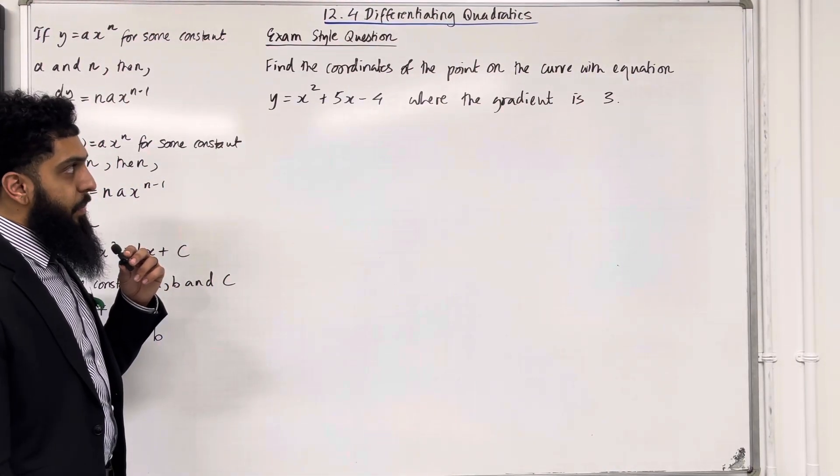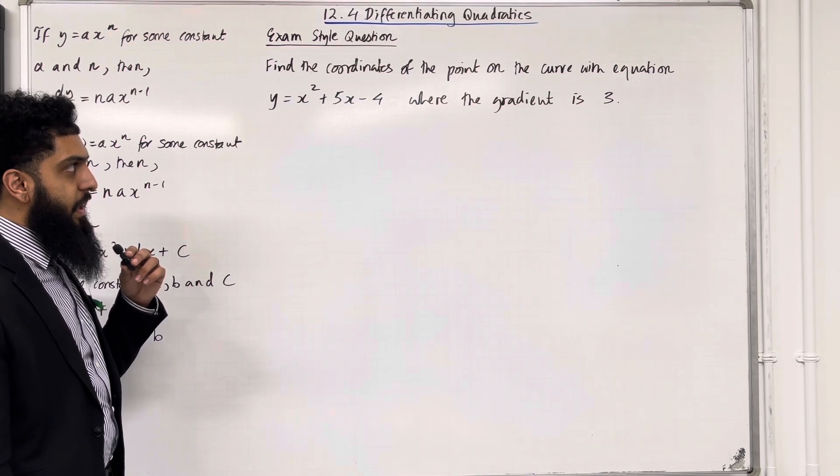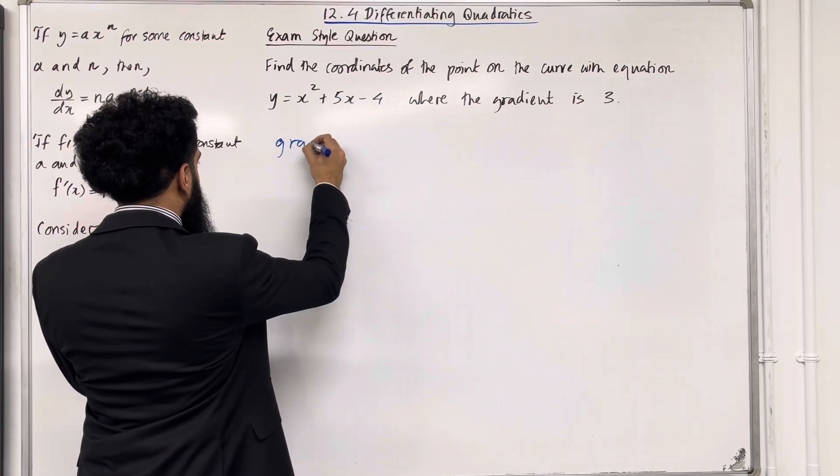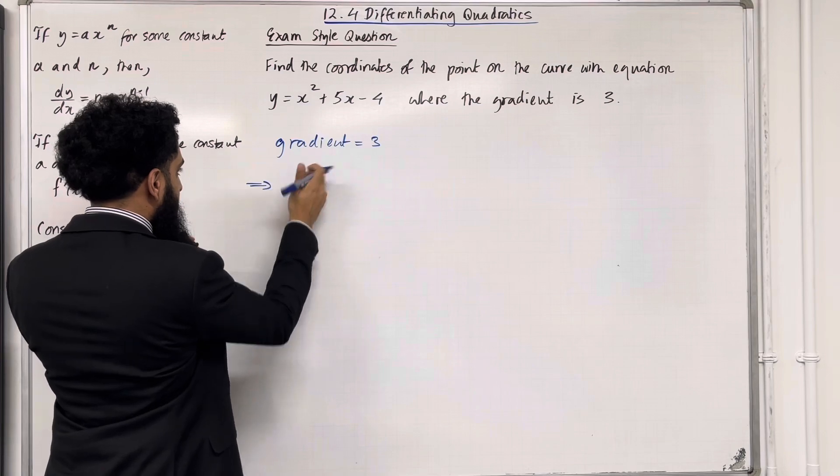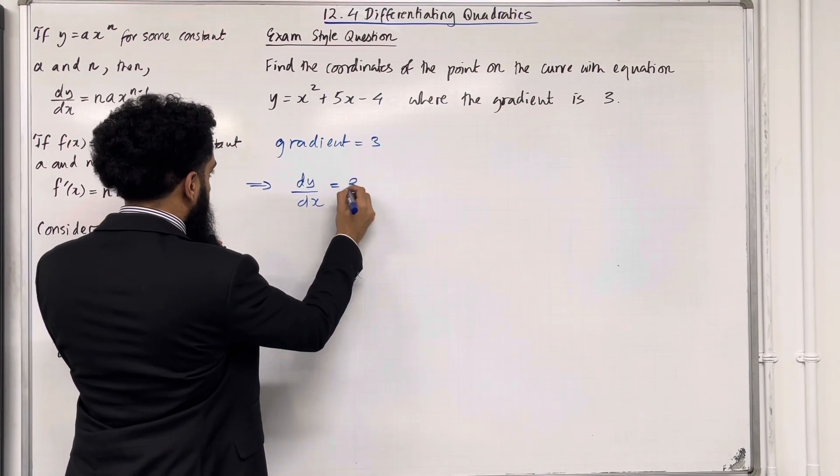Find the coordinates of the point on the curve with equation y equals x squared plus 5x minus 4, where the gradient is 3. So we have that the gradient is equal 3. This implies that the gradient is precisely dy over dx. This must equal 3.